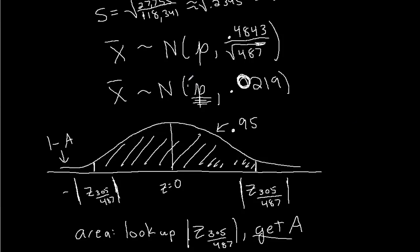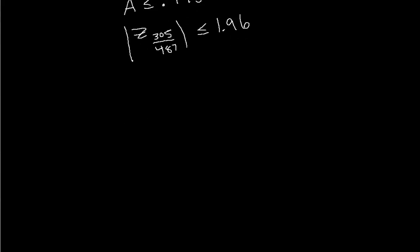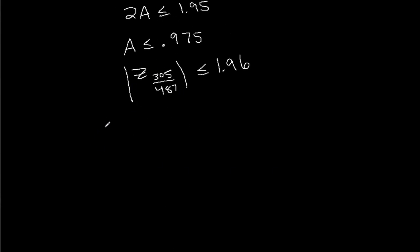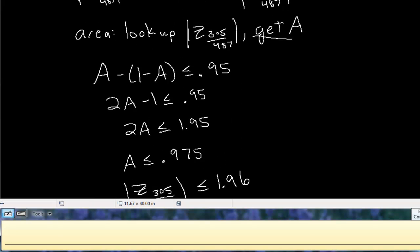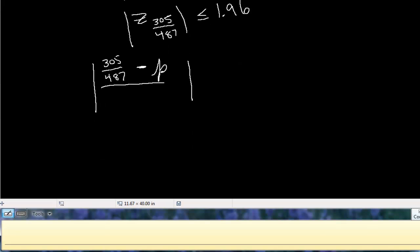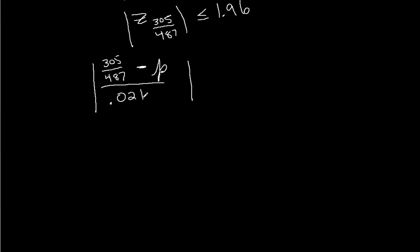Remember our goal here is to estimate p. Our goal is to estimate p. So now I'm going to write this z-score out, how it's computed. If I take the absolute value of the z-score, that's the absolute value of my observation, 305 over 487, that's my observed sample mean, minus the actual mean of the normal distribution, divided by the standard deviation. Let's remember what that standard deviation was. 0.0219. And I want that to be less than or equal to 1.96. So we have some algebra to do here.